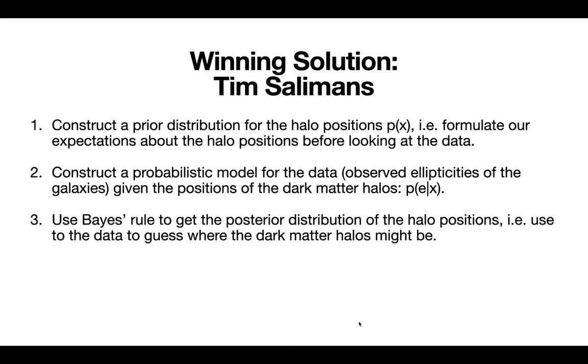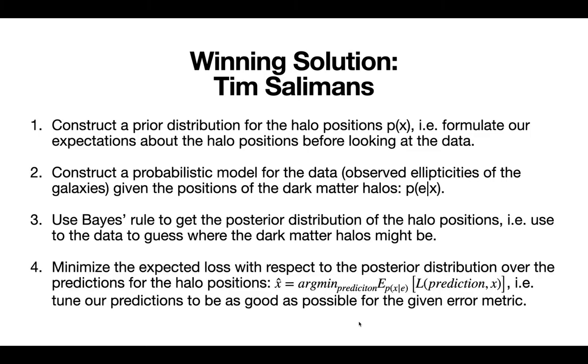The third method is to use Bayes' rule to get the posterior distribution of the halo positions, the predicted halo positions, and use the data to guess where those dark matter halos might be. And the last step is to minimize the expected loss with respect to the posterior distribution over the predictions for the halo positions and tune our predictions. We want to tune our predictions to be as good as possible for the given error metric.